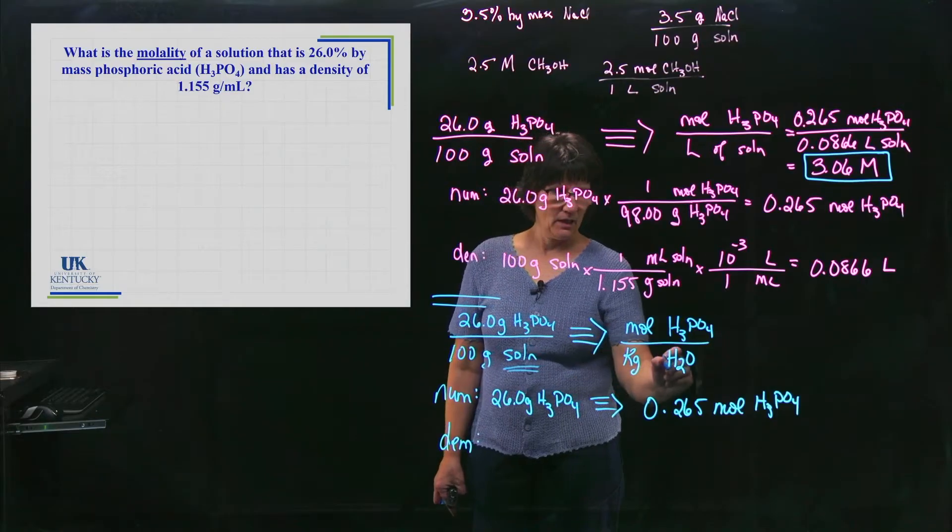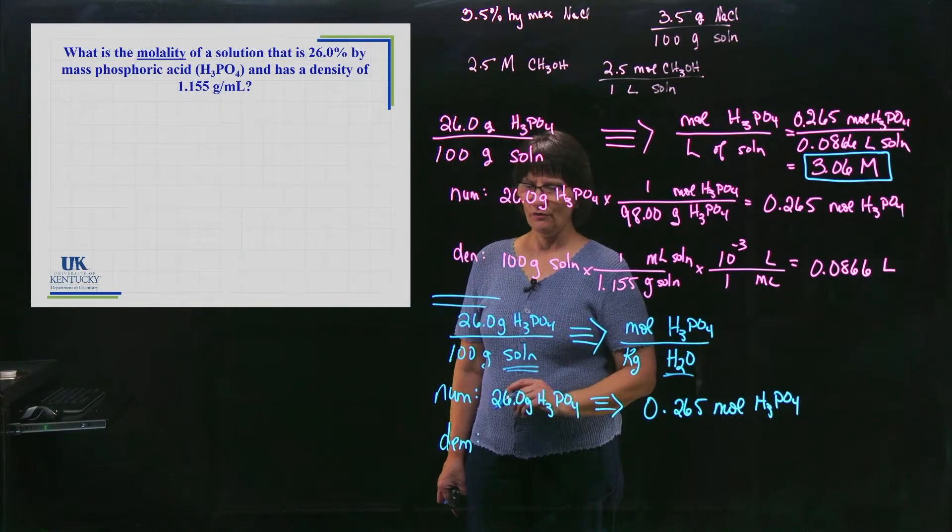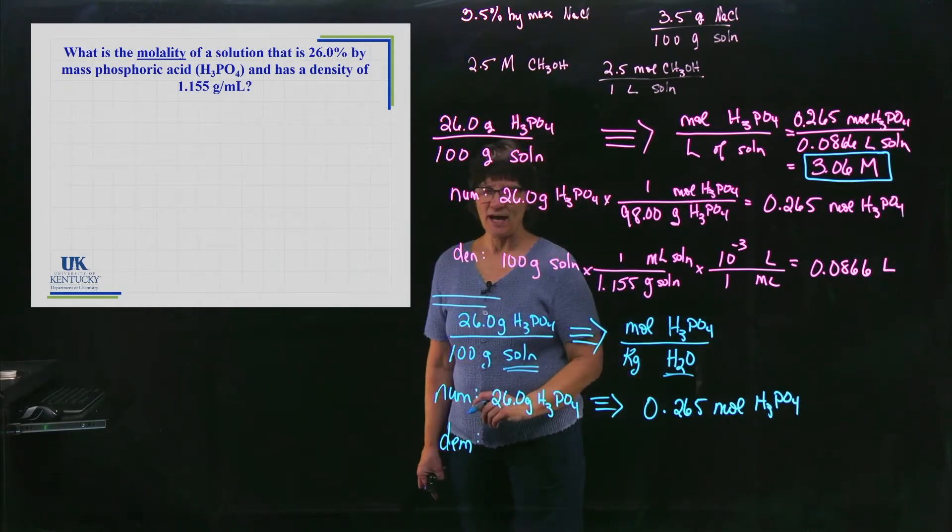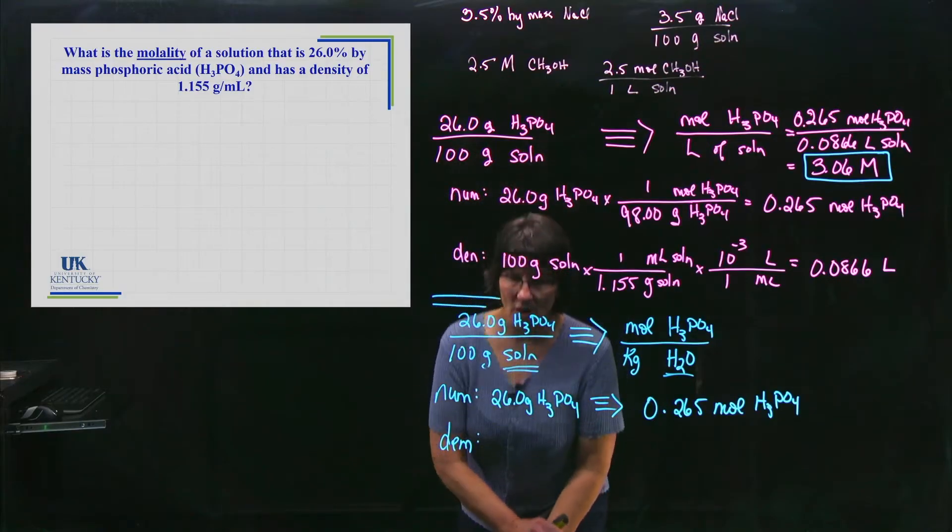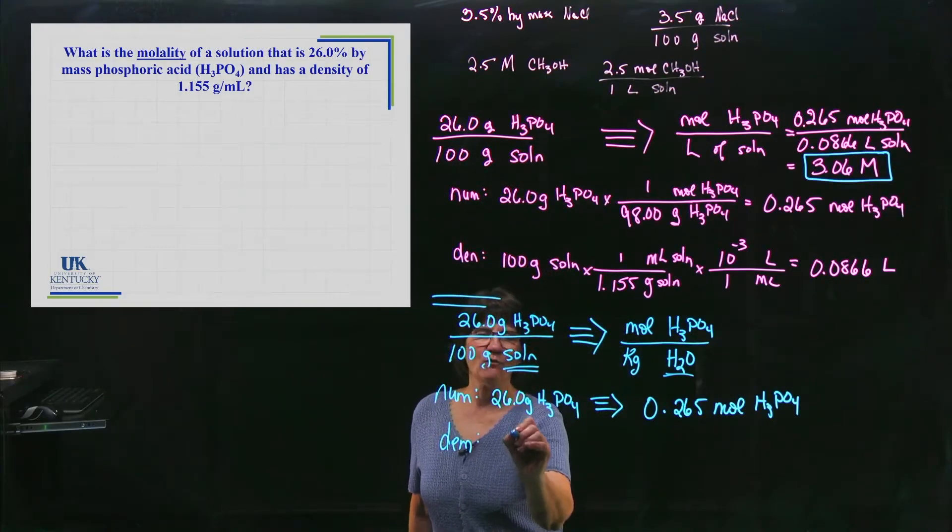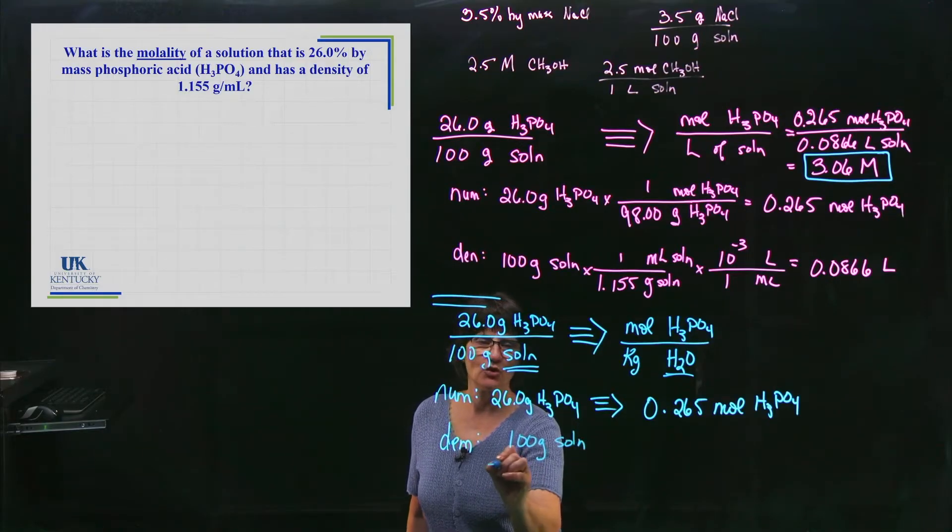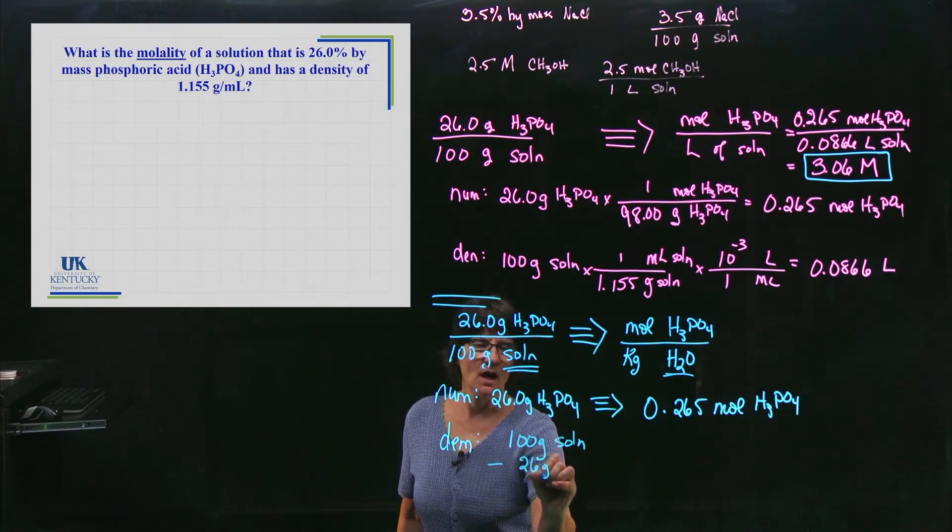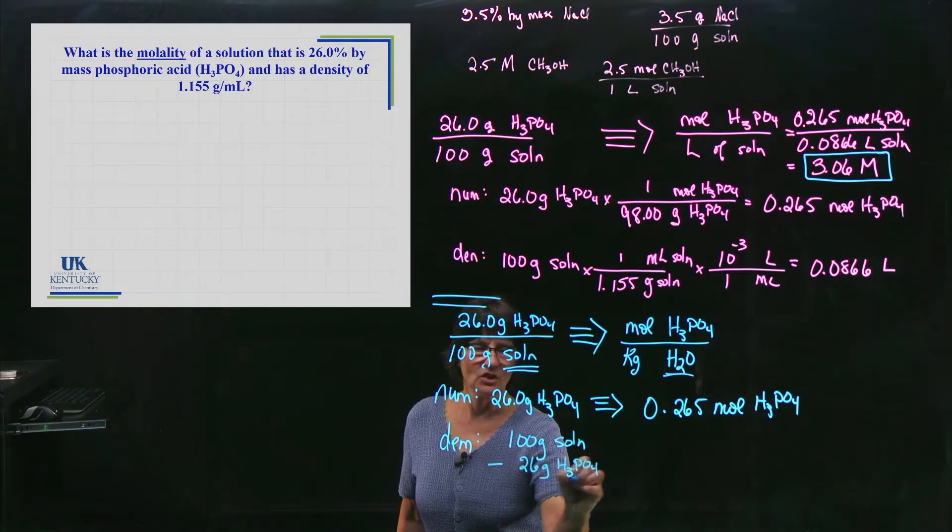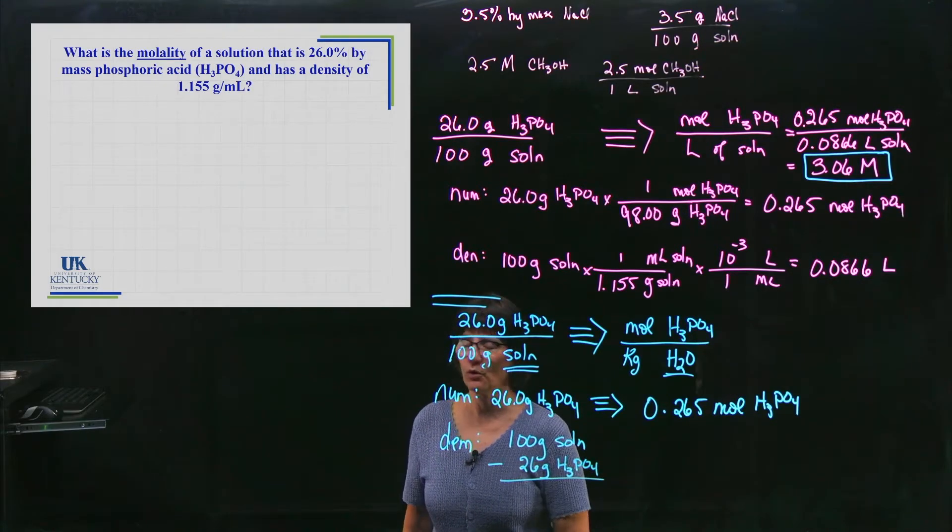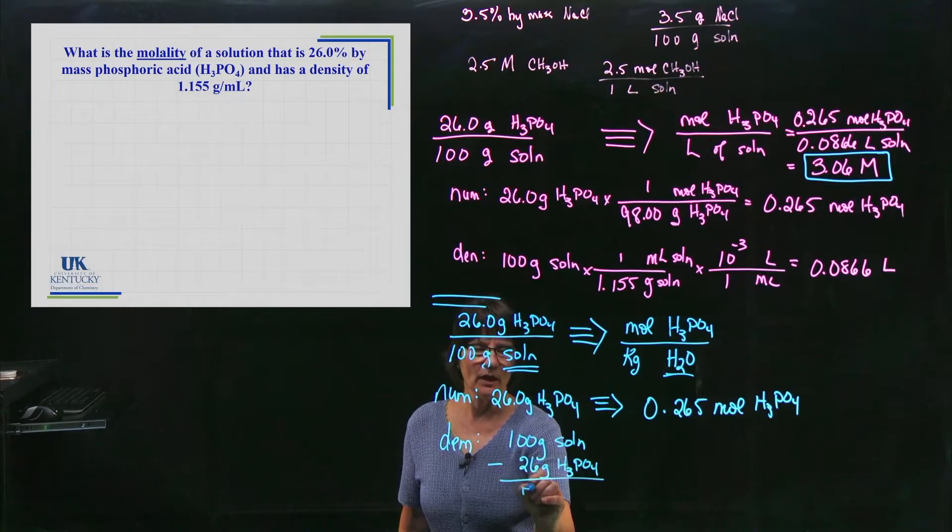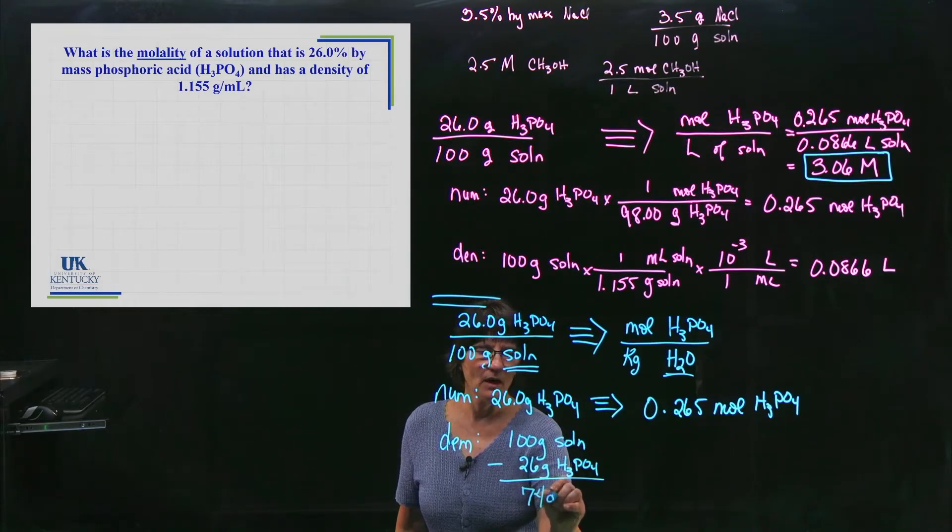So there has to be some subtraction in order to get just to the solvent. So if I have 100 grams of solution and I subtract out the grams of the solute, which is the H3PO4, I would be left with the grams of water. Does that make sense? That's the grams of water.